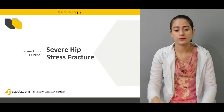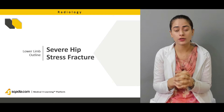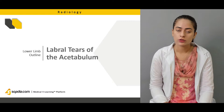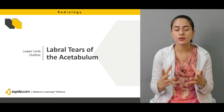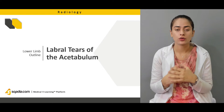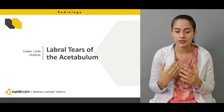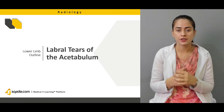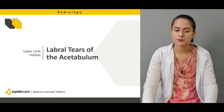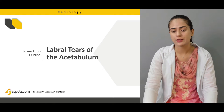Then we're going to talk about severe hip fractures in the context of chronic conditions, including stress fractures of the hip. We'll also discuss labral tears — the labrum widens and deepens the acetabular fossa for the femoral head to have a better surface area to move, similar to what we discussed for the upper limb. Labral tears can be picked up on a radiograph, but they are better visualized on MRI.